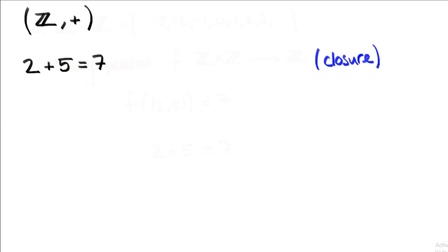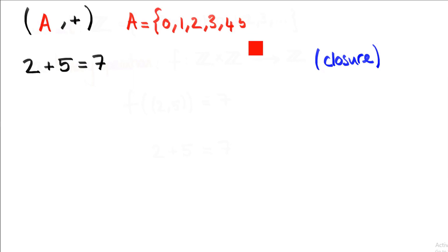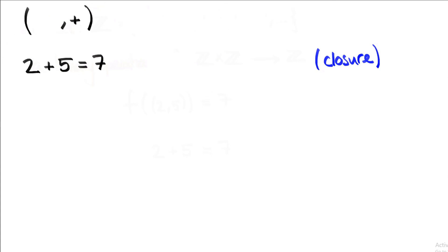The reason closure is specified is because sometimes you have a binary operation in mind that doesn't actually apply to the set you're trying to combine it with. For example, if we have addition and a new set A, where A is only the whole numbers from 0 to 5, then if we try to add 2 and 5 together in the ordinary way, we get back 7 — but 7 is not a member of A. So if we wanted to create a group using set A with a kind of addition, we'd need to redefine what exactly we mean by addition. Closure is really just checking that your binary operation actually works with the set you're creating a group from.